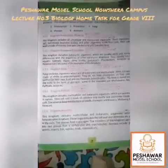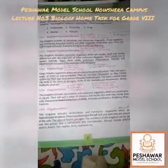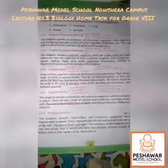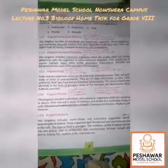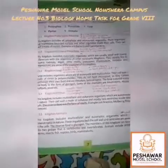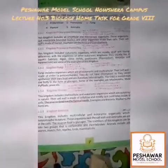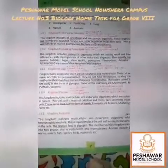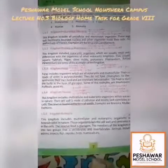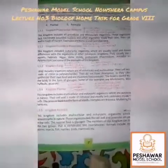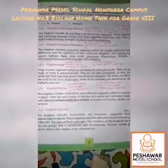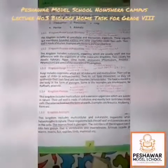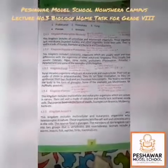Next is Kingdom Fungi. Fungi includes organisms which are all eukaryotic and multicellular. Their cell wall is made of chitin, which is a specific polysaccharide. They do not have chloroplasts, so they cannot synthesize their own food and are therefore heterotrophic. There are two types of organisms — autotrophic, which can make their own food, and heterotrophic, which cannot. Fungi store their food in the form of glycogen. Examples are mushrooms, molds, puff balls, and yeast.